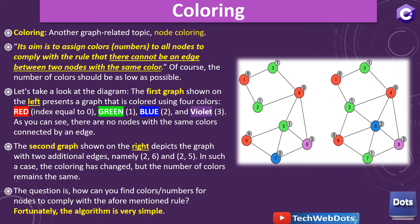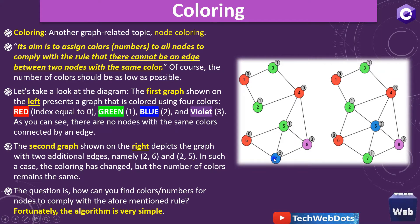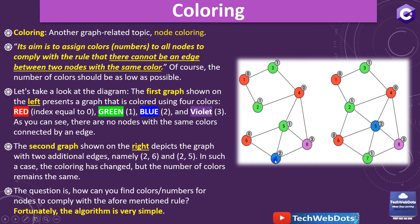The question is: how can you find colors or assign numbers to nodes to comply with the aforementioned rule? Fortunately the algorithm is very simple. When I say colors I mean assigning red, green, blue, and purple; when I say numbers I mean giving zero for red, one for green, two for blue. We can assign numbers or colors — they are equivalent.